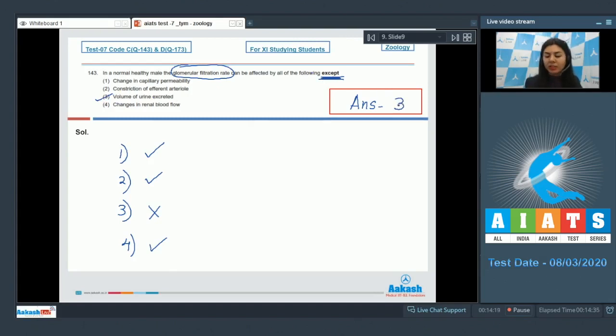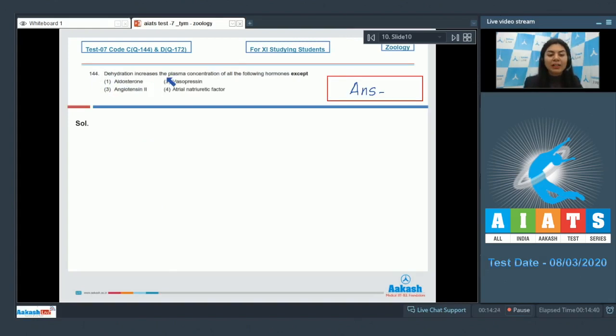Question 144: Dehydration increases the plasma concentration of all of the following hormones except: aldosterone, vasopressin, angiotensin 2, atrial natriuretic factor. In the state of dehydration, the body would try to conserve more water and inhibit mechanisms that lead to diuresis or excess water loss.